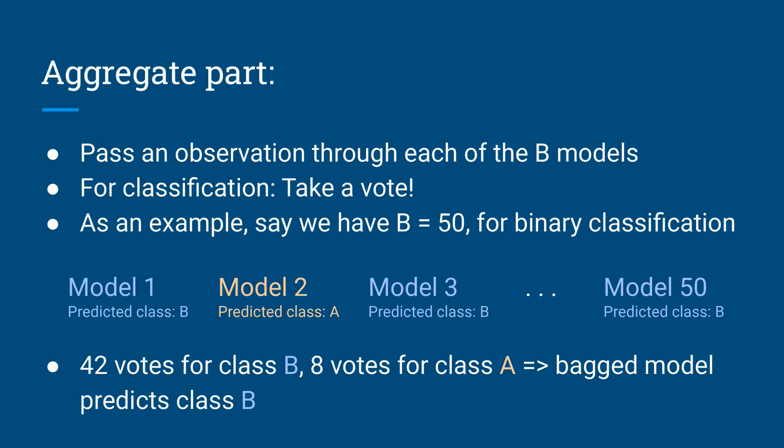To make predictions using the bagged model, we pass an observation through each of the B weak learners and then we aggregate the predictions. If it's classification, this usually takes the form of a vote. If we have a continuous response variable, this is typically performed as averaging.